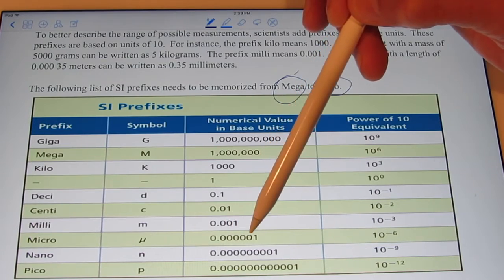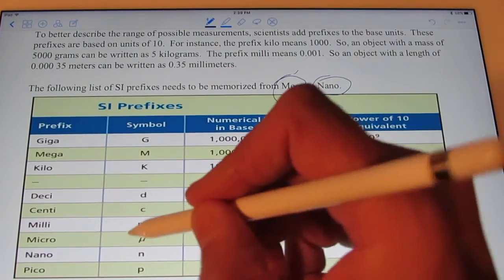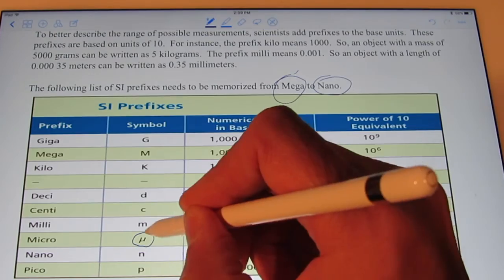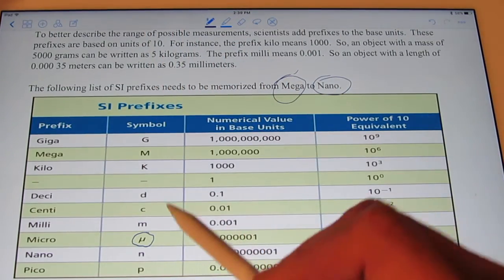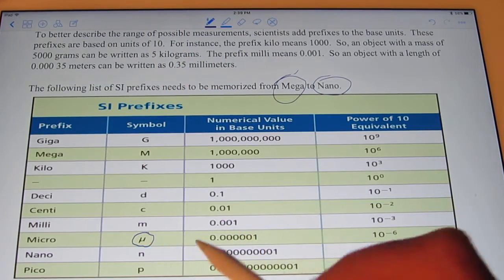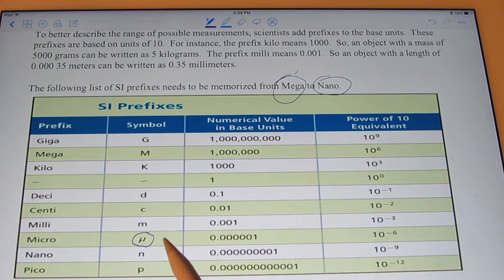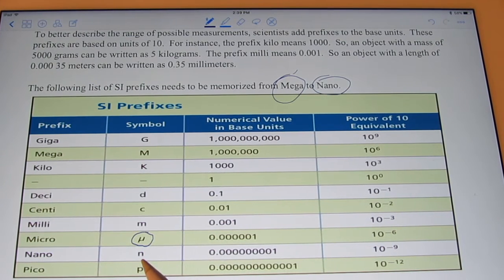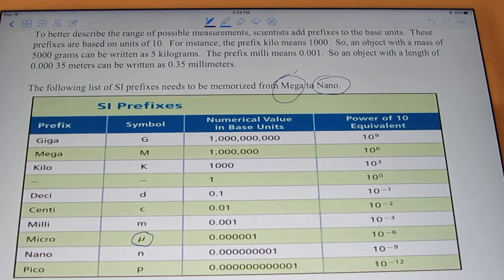Micro is a millionth, and that's abbreviated with the Greek letter mu. Notice it sorta looks like a U, but it's the Greek letter mu. And nano, the last one that you folks have to memorize, is abbreviated with the small letter n, and the numerical equivalent is a billionth, or ten to the negative ninth.